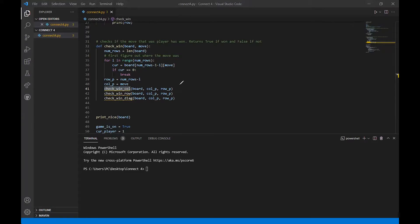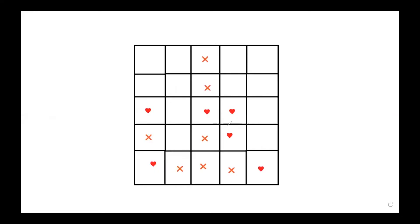So we have this situation, and after somebody places a move, to check for the column, the only thing we need to do is look down. Is this the same sign as this one? And then is this one the same sign as that one? No, it's not. So I don't have four, so I haven't won yet. That's how you check the columns. I invite you to pause for two to five minutes and try to code up the check win on the column.